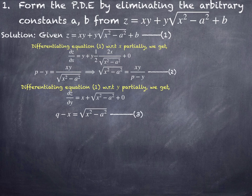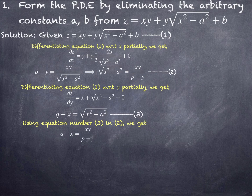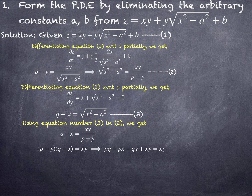Substituting equation number 3 into equation number 2: in place of √(x²-a²) substitute q minus x, and that equals xy/(p-y). Cross-multiplying and simplifying gives p(q-x) minus qy plus xy equals xy, and xy cancels. Therefore the final solution is pq equals px plus qy, which is the required PDE. Since there are only 2 arbitrary constants, first-order partial differentiation is sufficient; no second-order derivatives are needed.